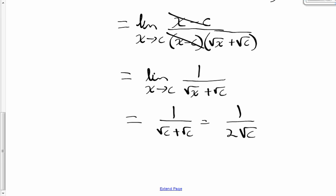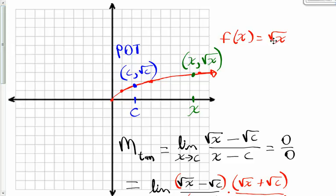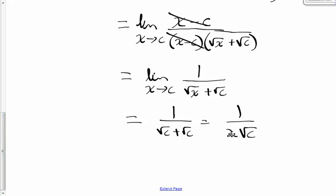So for this particular function — the square root function — the slope of a line tangent to the function at any point c comma square root of c is just going to be 1 divided by 2 square roots of whatever that x value is. This is the slope of the tangent line to the square root function at c.